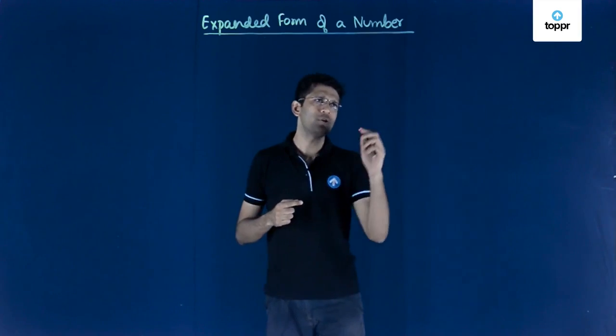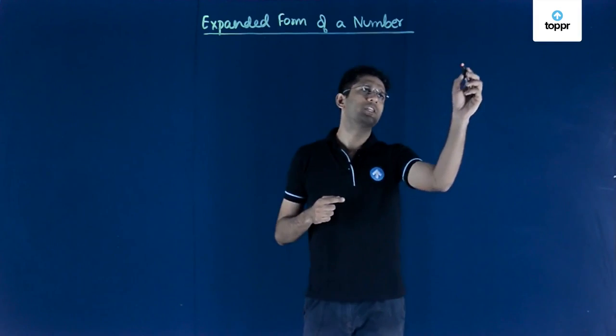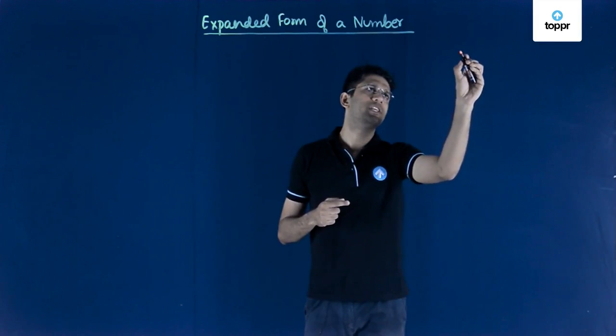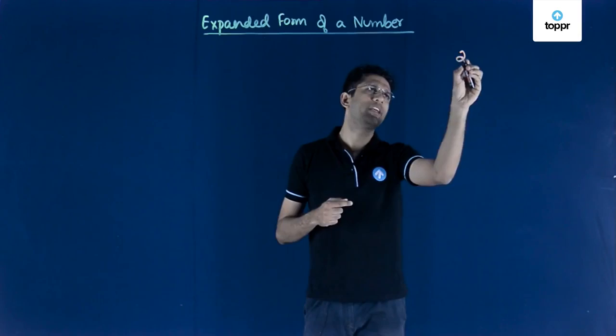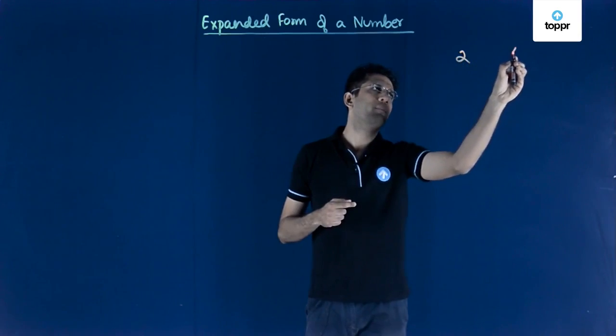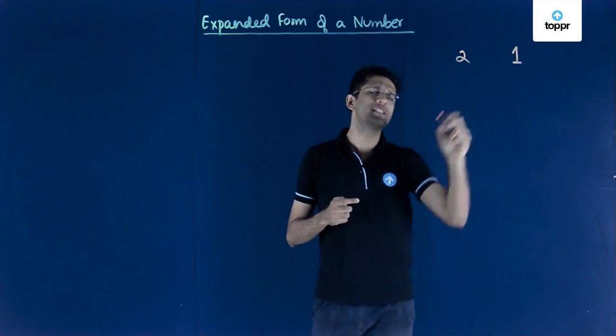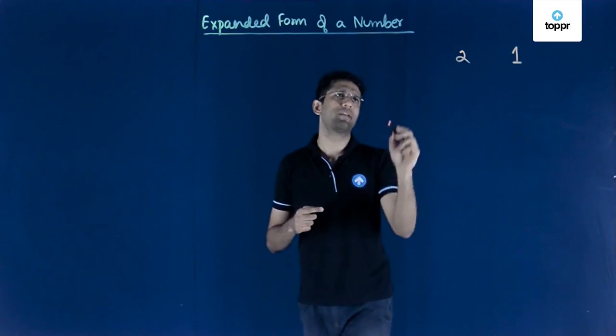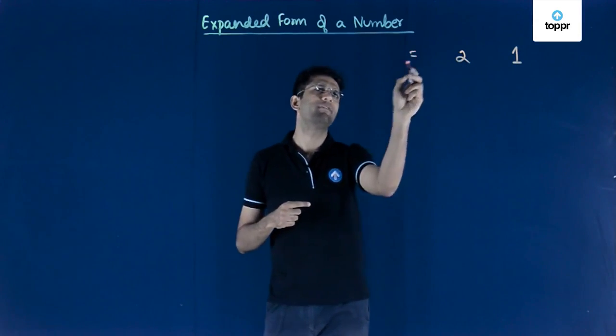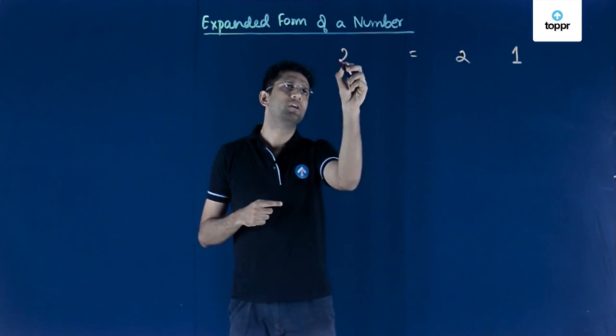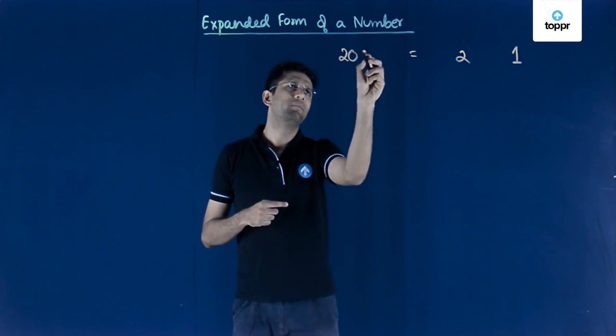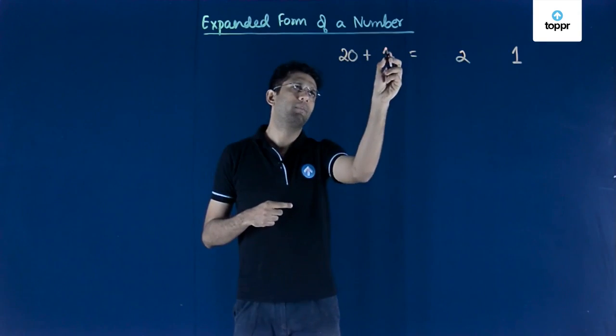Suppose you have a number such as 21, then this number can be written in an alternate manner. I can write 21 as 20 plus 1.